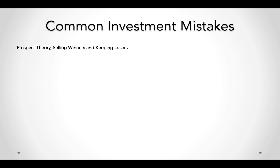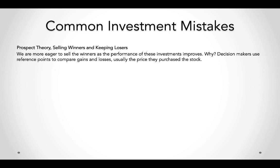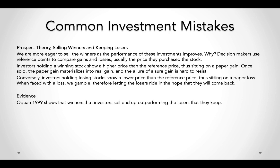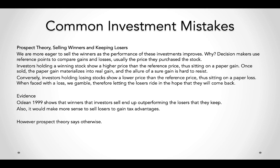Prospect theory and the selling of winners: we are more eager to sell winners as performance improves. Decision-making uses reference points — usually the purchase price — to compare gains and losses. If I bought a stock at $10 and it's now $20, I'm sitting on a sure gain, but only if I sell. System 1 says this is the easier option — sell the winner and keep the loser, because you take a gamble when faced with losses. Evidence confirms that winners are the ones investors end up selling.